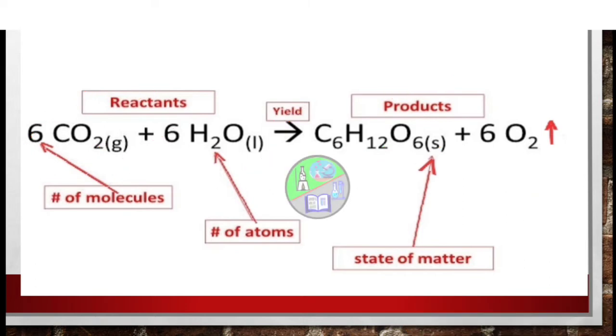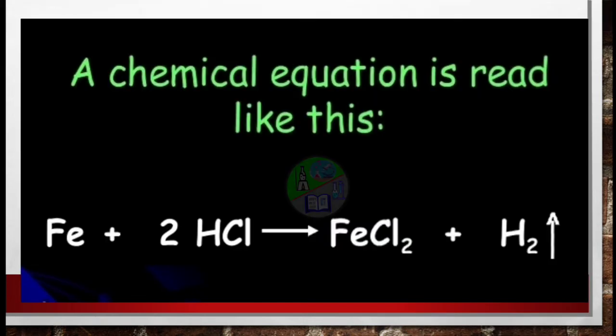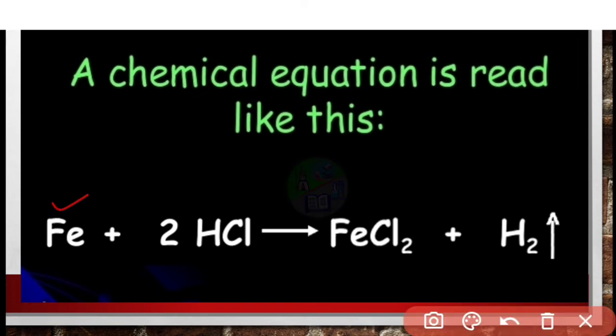So likewise we can take another example. Here we can see iron is reacting with hydrochloric acid to give iron(II) chloride and liberation of hydrogen gas occurs. So this equation can be read as iron when reacts with hydrogen gas.